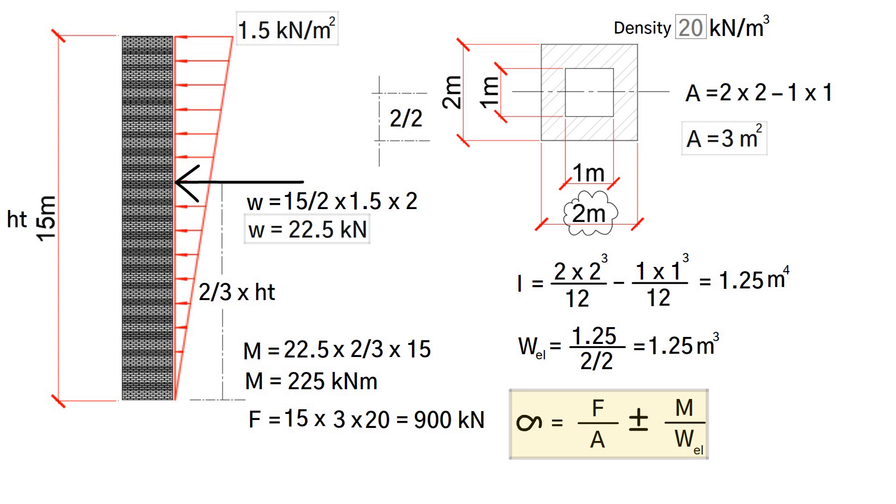Finally, we input our figures into our equation: 900 divided by 3, which equals 300, plus or minus 225 divided by 1.25, which equals 180 kilonewtons per meter squared.